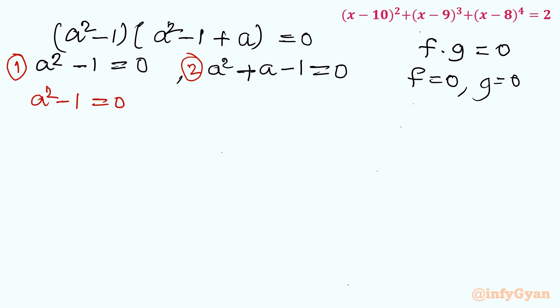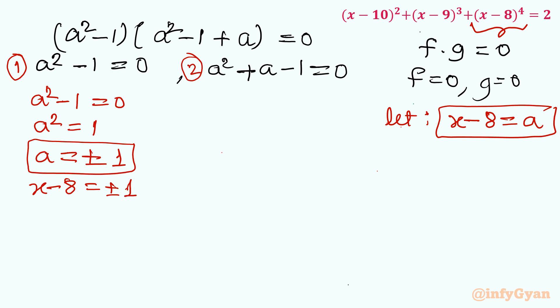From equation number 1, I will write a² - 1 = 0. Add 1 to both sides, a² is equal to 1. Take square root both sides, a will come out plus minus 1. If a is plus minus 1, remember our substitution. This was our substitution, so x minus 8 was our a. So in place of a I can write x - 8 = ±1. Add 8 to both sides, x is equal to 8 ± 1. That means 8 + 1 is 9, and 8 - 1 is 7. So we are having two integer solutions, x = 9 and x = 7.